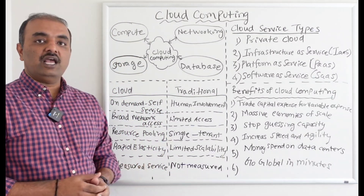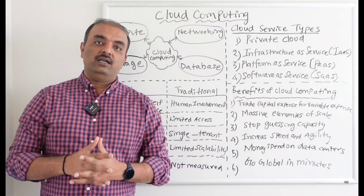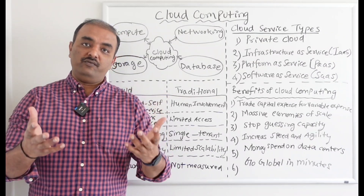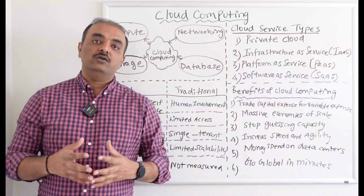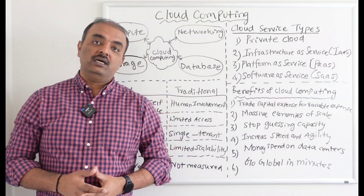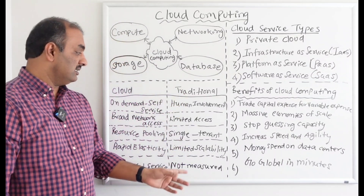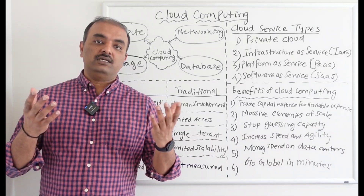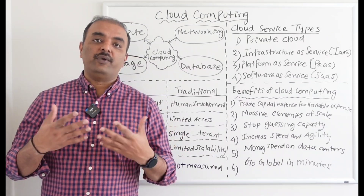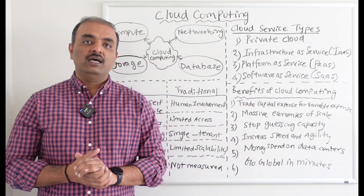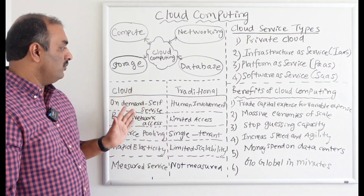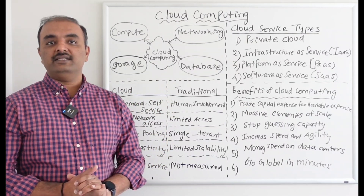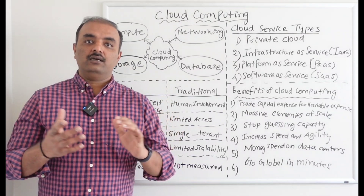Fifth is measured service — everything you use is measured. If you use services for one or two weeks in a month, you pay only for those. Whereas with traditional servers, even if you're not fully using them, you still pay for them. These are the key differences between cloud and the traditional way of maintaining computing services.